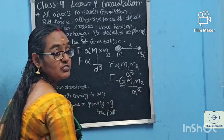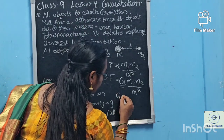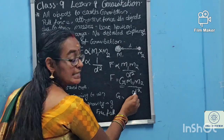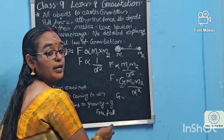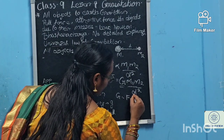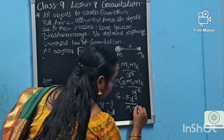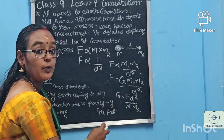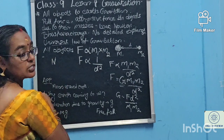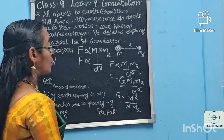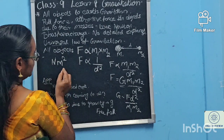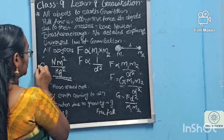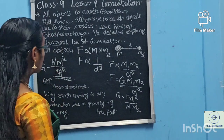Now, to find the value of G, we rearrange: G = F·D² / (M1·M2). To find the SI unit of G, we substitute units: F is in Newton, D is in meters so D² is m², M1 and M2 are in kg. Therefore the SI unit of G is Newton·m²/kg². You need not memorize it — understand how it is derived and it will stay in your mind.